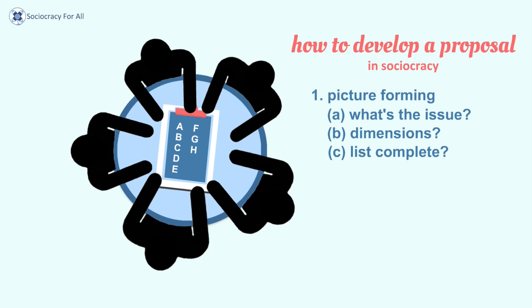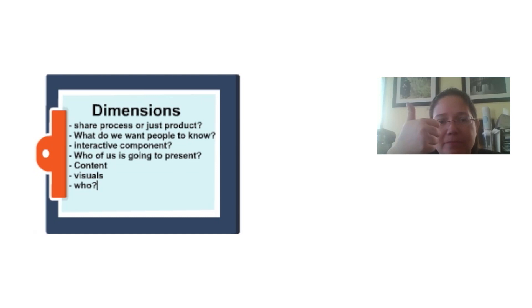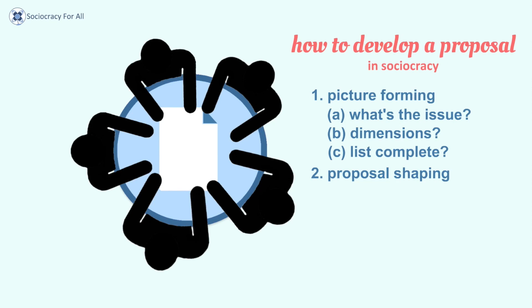We're making that decision together as a consent decision — thumbs up to move forward. The next step is proposal shaping. Now we're actually gathering ideas of what we could do. This is about opinions. We do a round where everybody says what they think we should do.